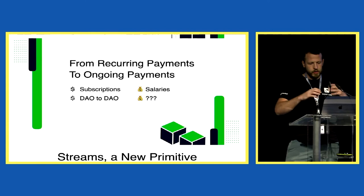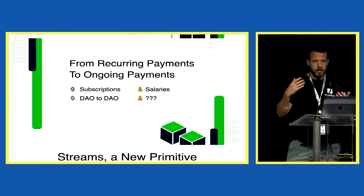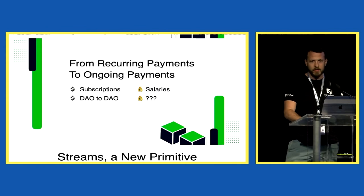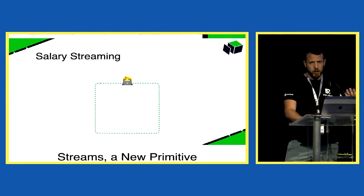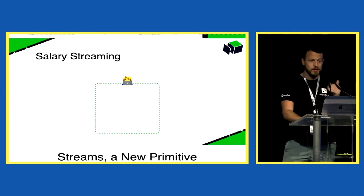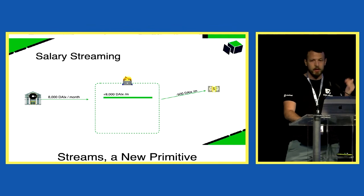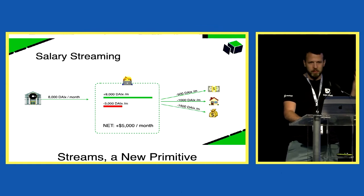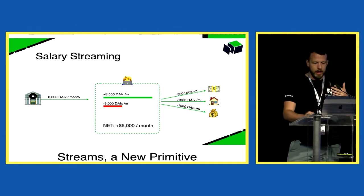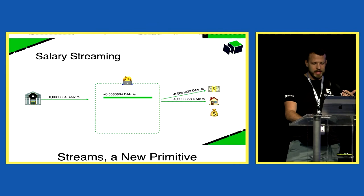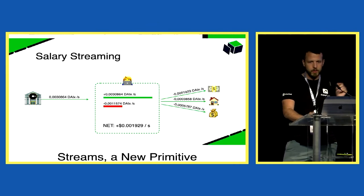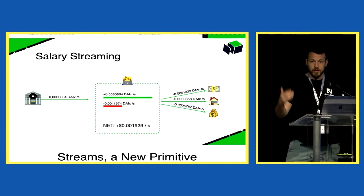What can you do when you start using streams in combination with those other primitives? You can build a lot of things. One thing about how salaries and streams work is that you can really send money as you receive it. You have a continuous income and can continuously spend that on expenses, rent, or invest part of it into money markets. As you receive funds you can transfer them — not once a month, but every second — continuously, with no transactions, fully on-chain.